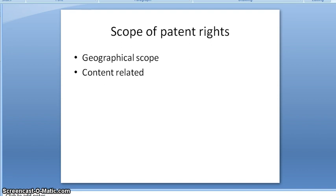Under Indian patent rights, you cannot offer a license to persons in the USA, Korea, Japan, or China. If you have a patent grant in a particular country, you are preventing others from using your patented product only within that country. You cannot offer a license to persons residing in the USA, Germany, Spain, Italy, or elsewhere. You would need to apply through the Indian Patent Office for that jurisdiction.